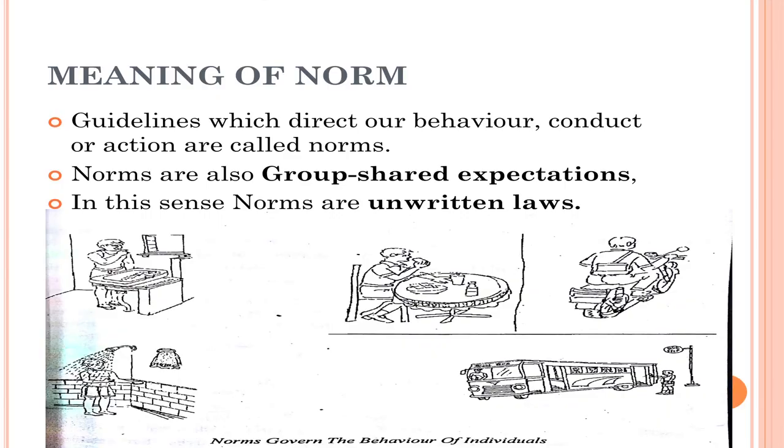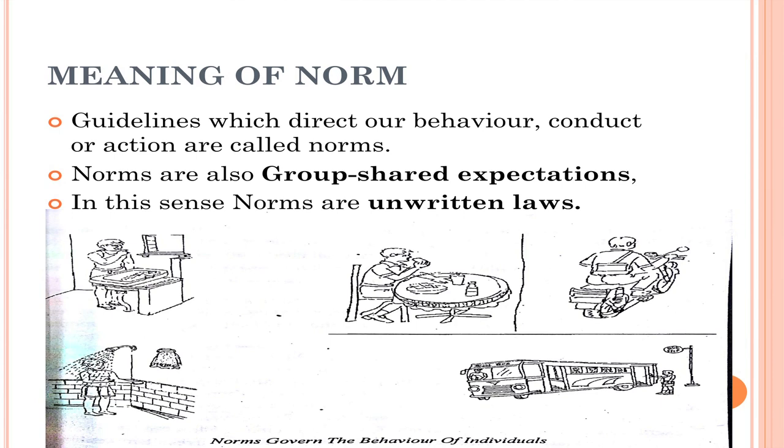Norms are shared in nature. If I believe something is right and some guidelines are given to me as a part of society, the same meaning is understood by others as well. For example, I believe that in class I have to say good morning or good afternoon to a teacher — the other students in the class would also believe the same thing. Norms can be called unwritten rules of society — unwritten, but accepted and understood in a similar way by each and every member of society. They are simply a direction to our behavior in society.